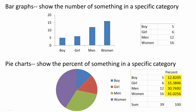Pie charts show the percent of something in a specific category. You could transform this data into a pie chart, but it's important to first get a percent for each number. So what we do here is sum the total: 5 plus 6 plus 12 plus 16 and get 39.